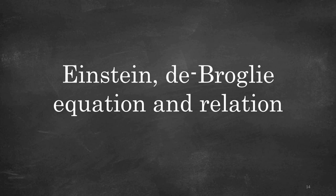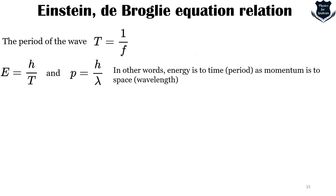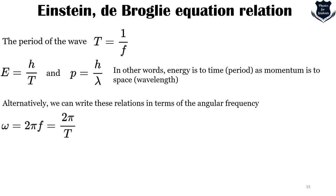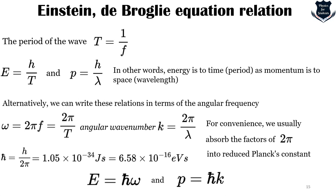Lastly, we will look into the Einstein-de Broglie relation. The similarity of the Einstein and de Broglie relations comes from the period of a wave, which is T equals 1 upon f. In other words, energy is to time period as momentum is to space wavelength. Alternatively, we can write these terms in relation of the angular frequency, omega equals 2 pi f, which is 2 pi upon T, and the angular wave number k equals 2 pi upon lambda. For convenience, we usually absorb the value of 2 pi into the reduced Planck's constant, which is h bar equals h upon 2 pi. This gives us simply E equals h bar omega and p equals h bar k.